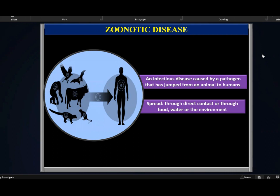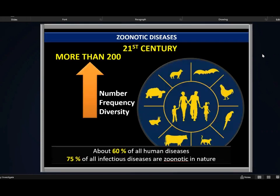It's an infectious disease which is caused by a pathogen that has jumped from an animal to humans. The spread could be either through direct contact or through an agent like food, water, or the environment. In the 21st century, zoonotic diseases have exploded all over the place. We now have more than 200 diseases which are zoonotic in nature, and in terms of number, frequency, and diversity, there has been a tremendous increase — about 60% of all human diseases are zoonotic in nature, and 75% of all infectious diseases are zoonotic.